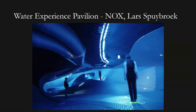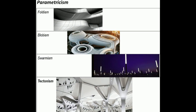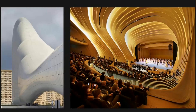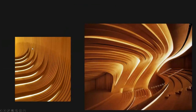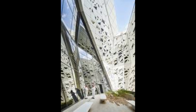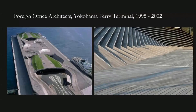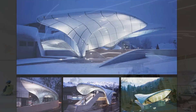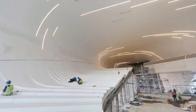Foldism, tectonism, blobism, and swarmism are architectural movements that have emerged as subsets of parametric architecture, each exploring unique aspects of its principles. Foldism delves into the world of folding geometries and origami-like forms. Architects like Zaha Hadid and Daniel Leibskind have harnessed parametric modeling to craft fluid and intricate designs that challenge traditional architectural boundaries.